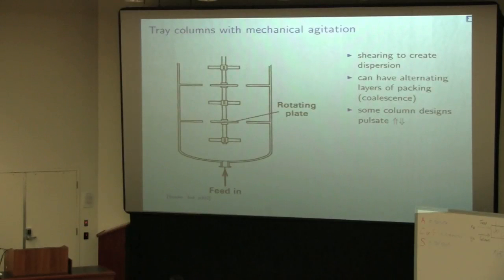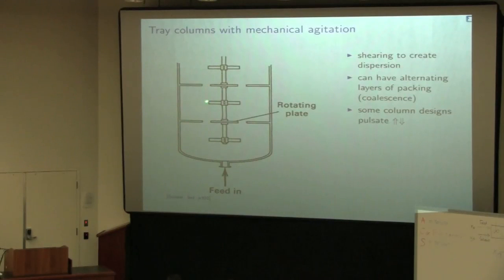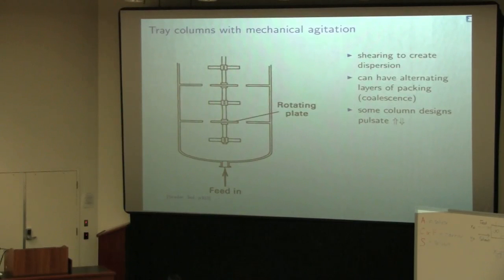We can also add mechanical agitation into the column — an impeller at the center with multiple turbines at different heights, and smaller stator baffles. As this rotates it creates high shearing, encouraging particles to mix, and coalesced particles accumulate under the baffle then rise up, get sheared again, move up to the next baffle, coalesce and rise again. Other designs pulsate this impeller up and down to create up-and-down mixing. Further still you can add layers of packing — that mesh-type idea — periodically to create coalescence.